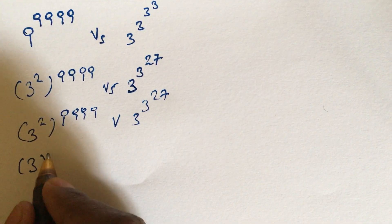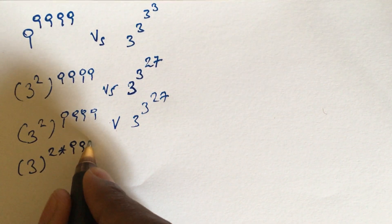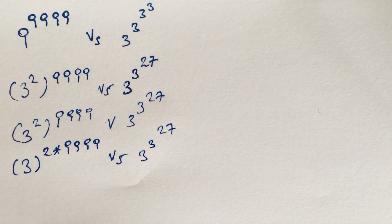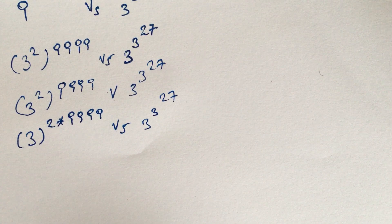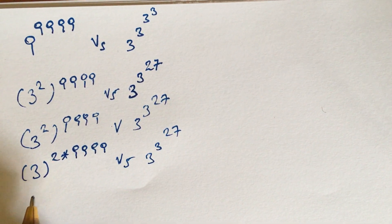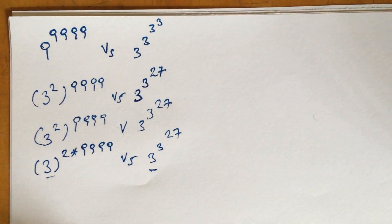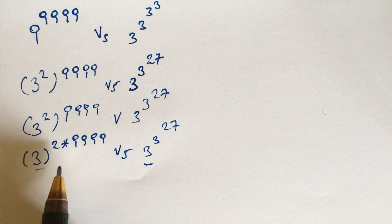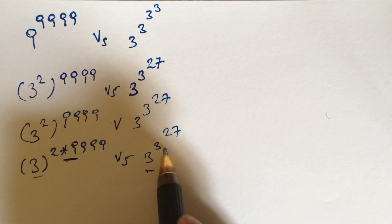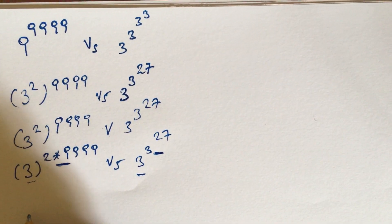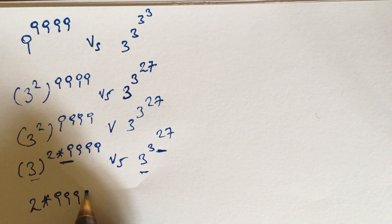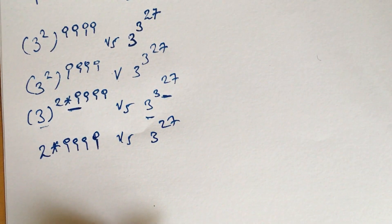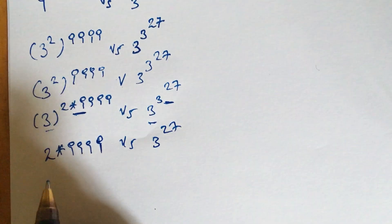We have 3 to the power of 2 times 9^9^9, versus 3 to the power of 3 to the power of 27. Since we have the same base — base 3 on both sides — we now need to compare only the exponents.